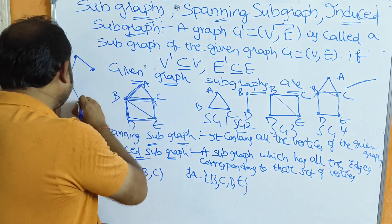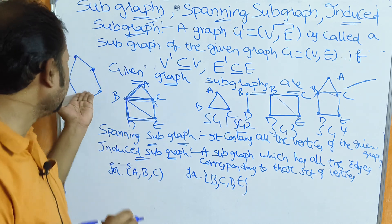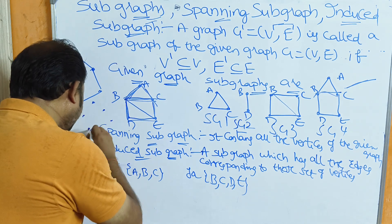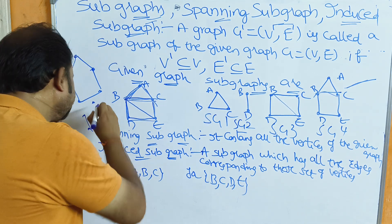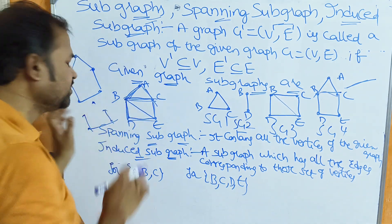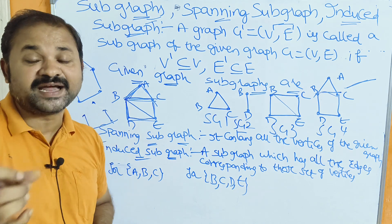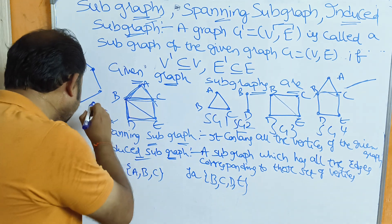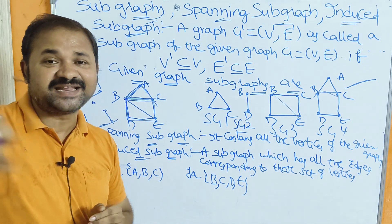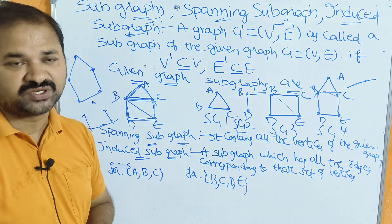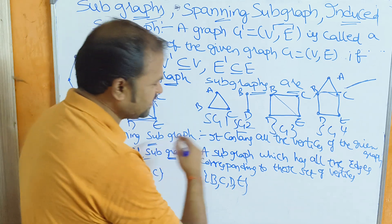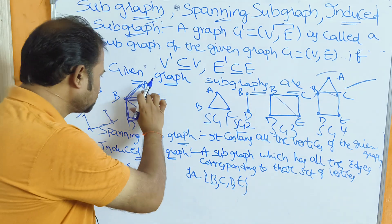We can construct multiple spanning subgraphs from the same graph, as long as each contains all five vertices. A spanning subgraph may also contain isolated vertices — a vertex with no adjacent nodes. So this is also a valid spanning subgraph.